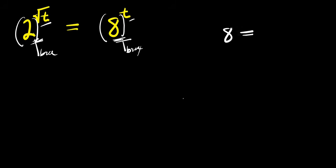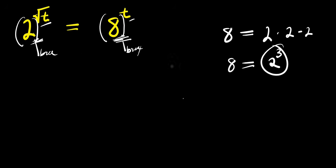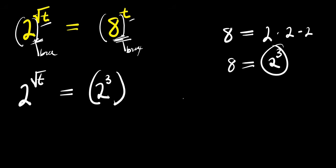Remember, 8 is simply 2 times 2, that is 4 times 2, which means 8 equals 2 to the power of 3. So instead of writing this 8, we are going to represent it with 2 to the power of 3. So we have 2 to the power of root t equals 2 to the power of 3, raised to the power of t.